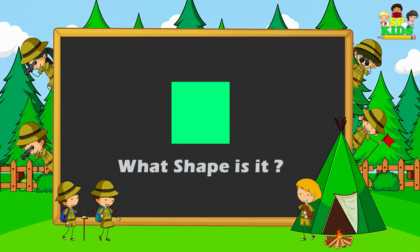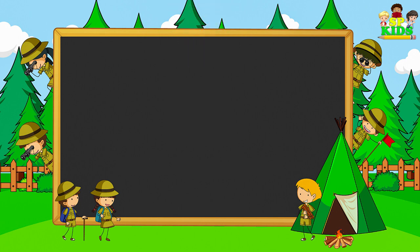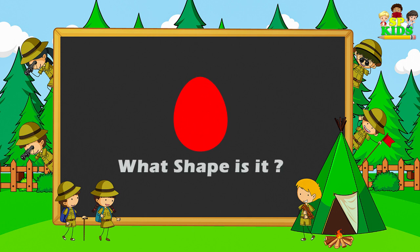What shape is it? Square. What shape is it? Oval.